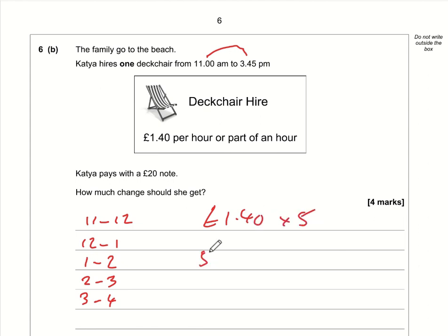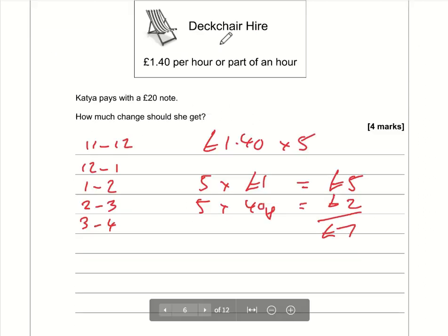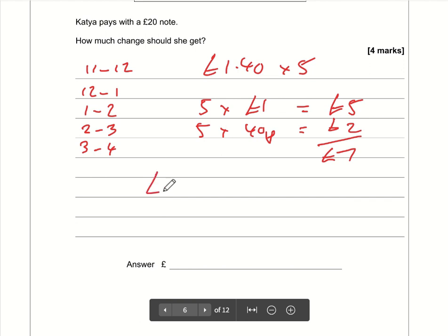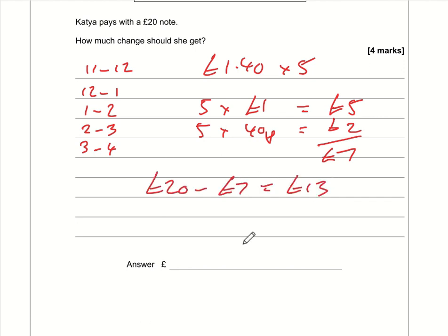That's £1.40 multiplied by 5. I'll do 5 times £1 and 5 times 40p: five pounds plus £2 from 200p equals £7 total. If Katya pays with a £20 note, the change is £20 minus £7, which is £13.